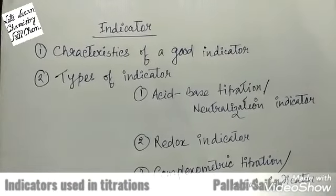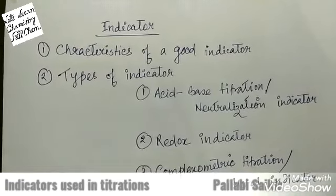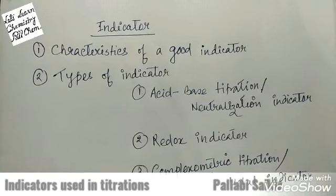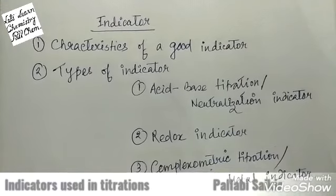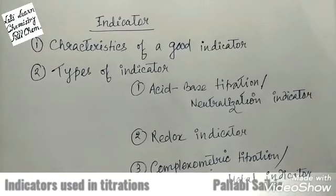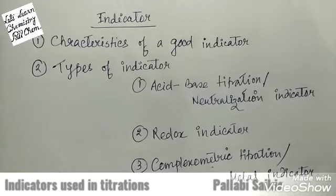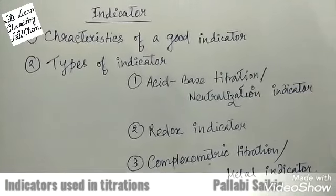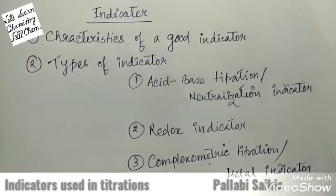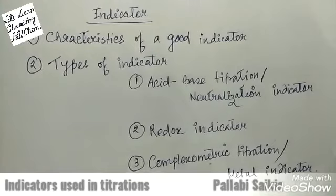Dear students, hope all of you are doing great. In this video let us discuss briefly about indicators which are used in titrations. The points going to be discussed are: number one, characteristics of a good indicator; then types of indicator. In this video we are including three titrations: acid-base titration, redox titration, and complexometric titration, and the indicators related to these three titrations are discussed.